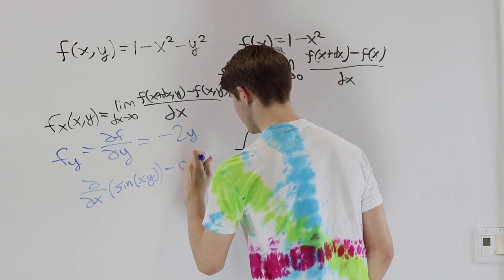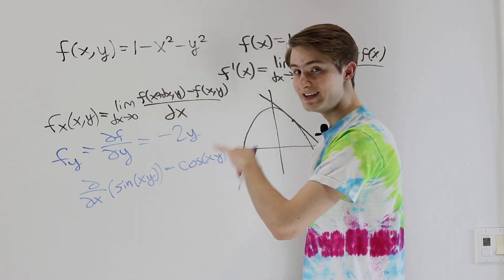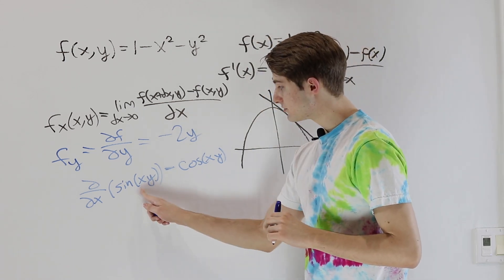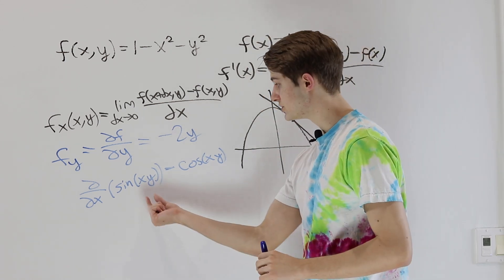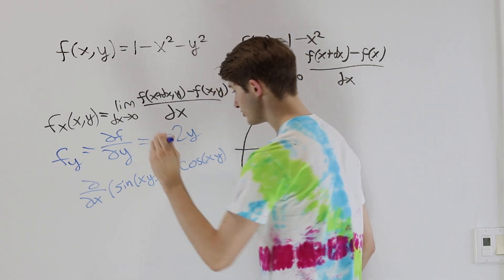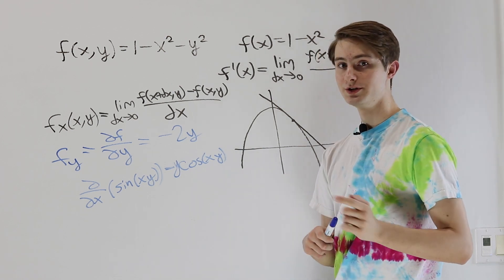and then by the chain rule, we're going to need the derivative of the inside function with respect to x. In that case, when we differentiate x, it goes away and we're just left with our constant, which is y. So our final result is y times the cosine of xy, and that's how we do partial derivatives.